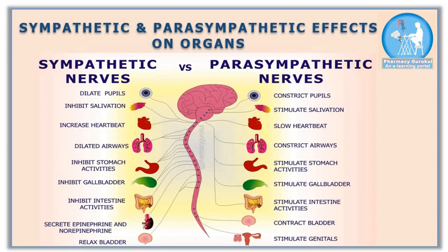In sympathetic response, gallbladder activity is inhibited, whereas in parasympathetic response, gallbladder activity is stimulated to produce more bile. Due to sympathetic effects, intestine activities are inhibited, whereas due to parasympathetic effects, intestine activities are stimulated.